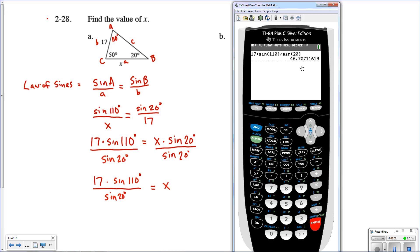I'm going to hit enter. And we're going to see that our missing side length is going to be about 46.7. We'll go ahead and round it to the nearest hundredths place. So we're going to say x is approximately 46.71 units. And again, we use the law of sines to come up with that.